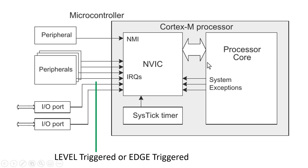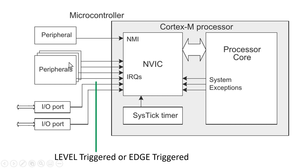After serving this interrupt, the processor has to clear it by writing into some register of the peripheral. Until that time, the peripheral will not change the logic level at the interrupt line. It will only be changed once the interrupt is served by the processor and the processor clears it by writing into one of the registers of the peripheral — then the level will become logic 1 again.